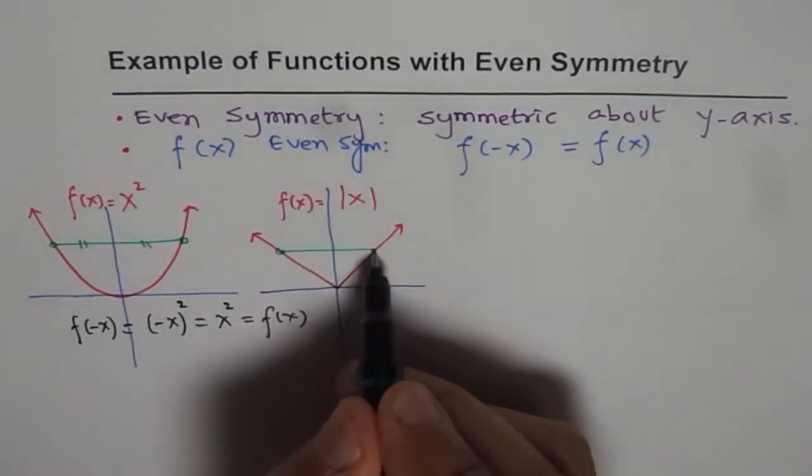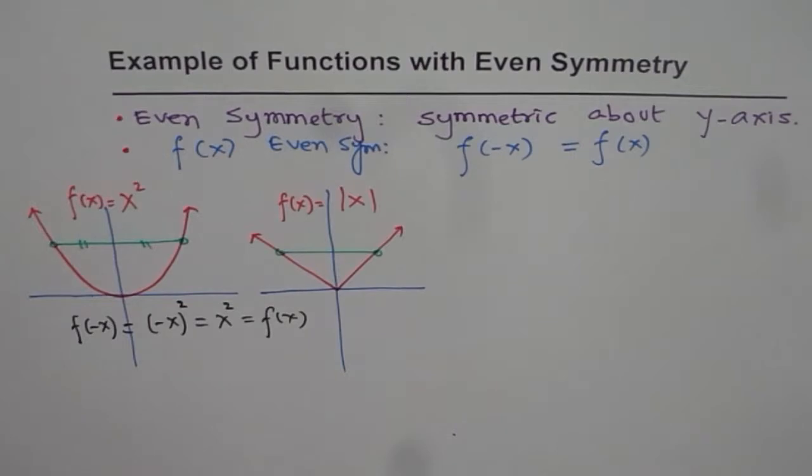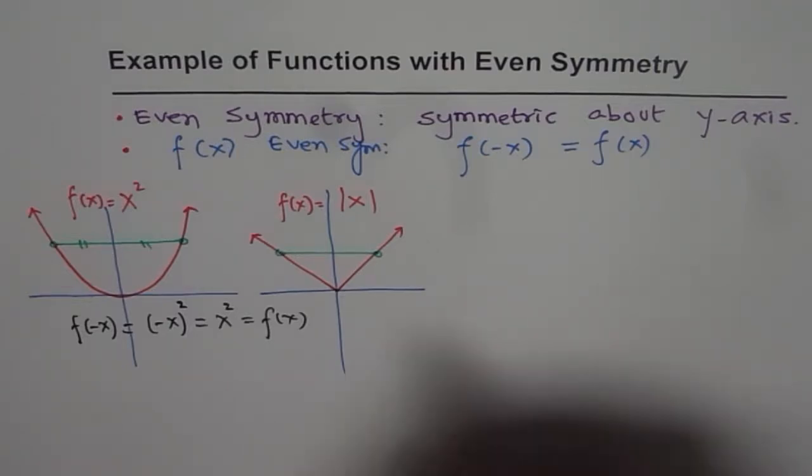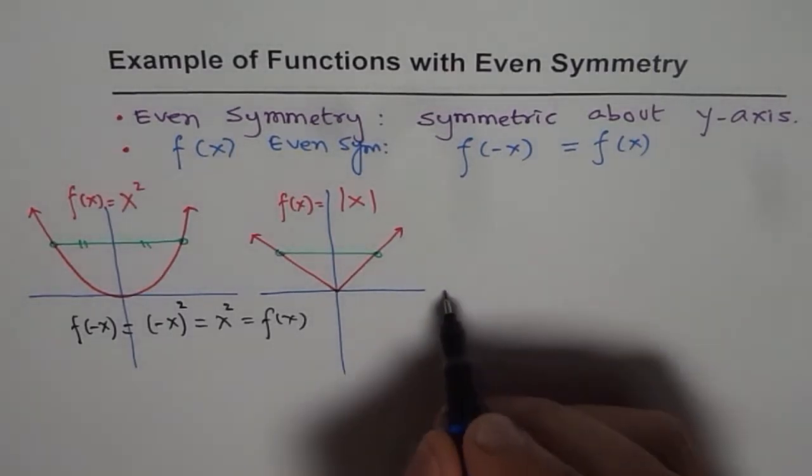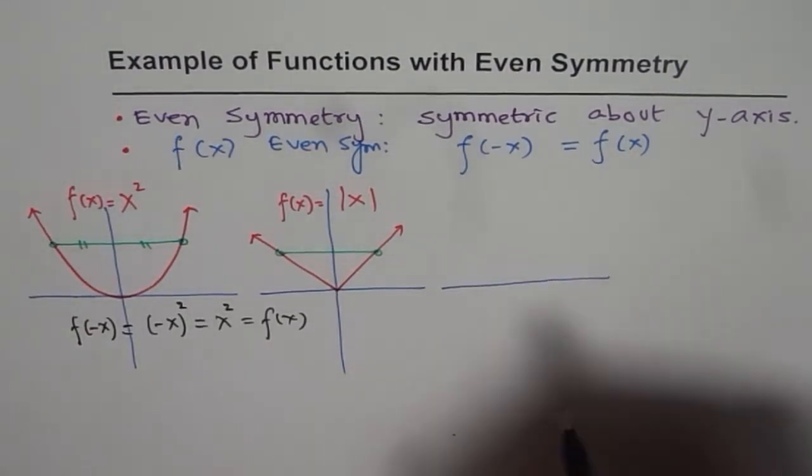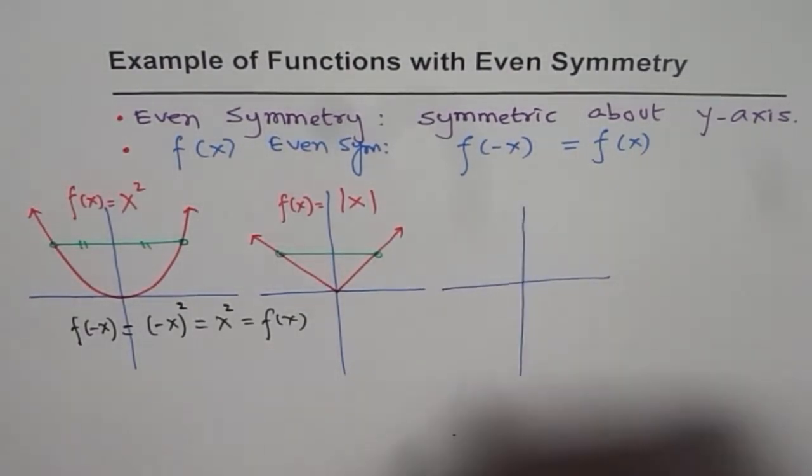So it has even symmetry. And on graph, you can always check that there will always be a mirror point. So these two are easy examples, we always see them. Now the idea is to get some more. Can you help me to give some more examples which will have even symmetry?